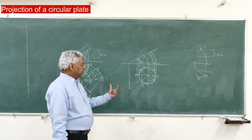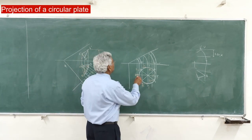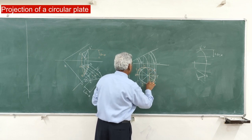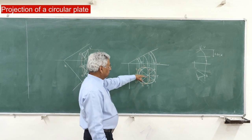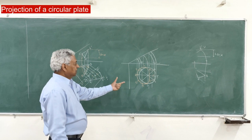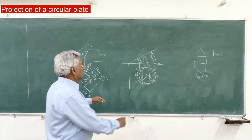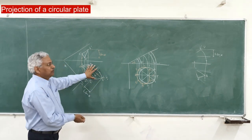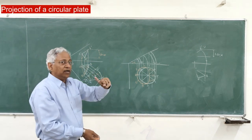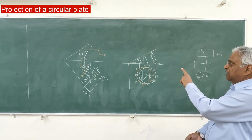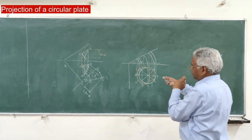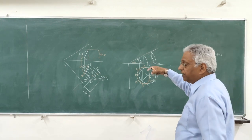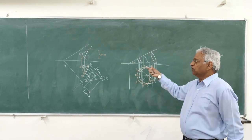Now join all these eight points through a smooth curve so that you get an ellipse like this. You join all these points — one, two, eight — by a smooth curve to get an ellipse. This is the plan of a circular plate which is inclined at angle alpha to the plane. Similarly, you can draw the projection when it is inclined to the vertical plane, or when it is inclined to both planes. When it is inclined to both planes and one diameter makes a certain angle — as we have taken the alpha-beta-theta or alpha-beta-phi cases — the same case can happen with the circular plate: the plate is inclined to one or both planes and one diameter is inclined to either HP or VP. So you have to satisfy that condition.